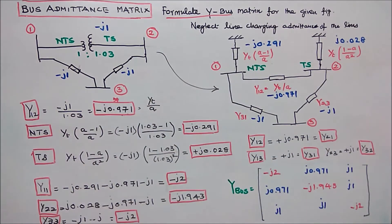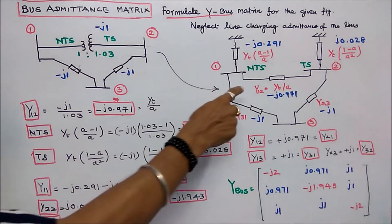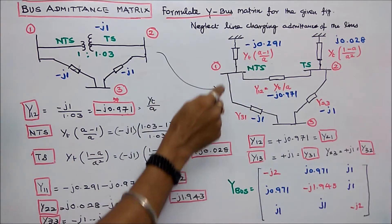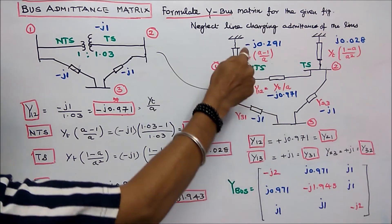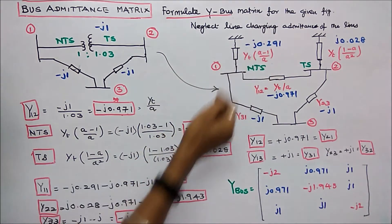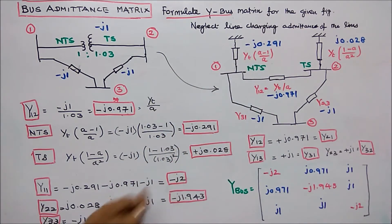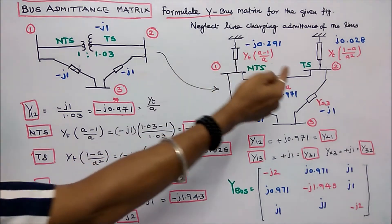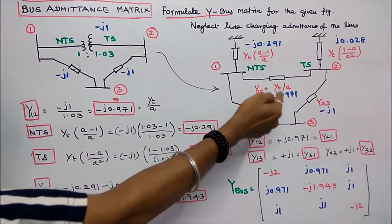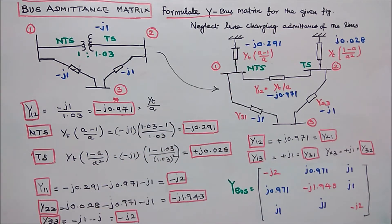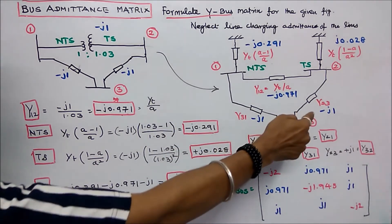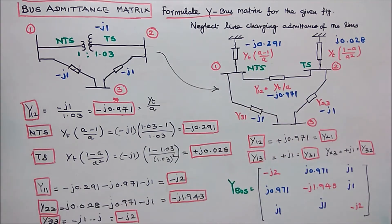Third step: we have to form the Y-bus matrix. First, Y11: three elements are connected, so Y11 equals minus J0.971 minus J0.0291 minus J1, which equals minus J2. Y22 equals minus J0.971 plus J0.028 minus J1, which equals minus J1.943. Y33 equals minus J1 minus J1, which equals minus J2. The diagonal elements are complete.